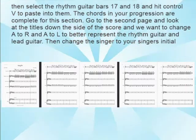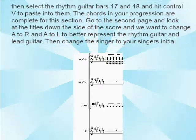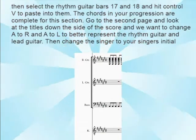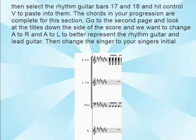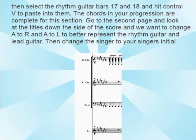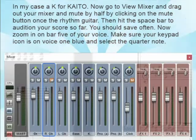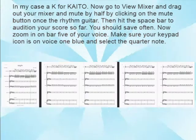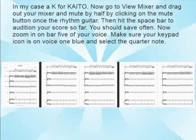Go to the second page, look at the instrument names down the side, and change the first acoustic guitar label from 'A' to 'R' and the second from 'A' to 'L' to better represent rhythm and lead guitar. Then change the singer label to your singer's initial — in my case, K for Kaido. Then go to View Mixer, drag out your mixer, and mute the rhythm guitar by half by clicking the mute button once. Hit the space bar to audition your score so far.